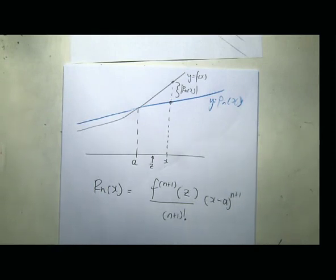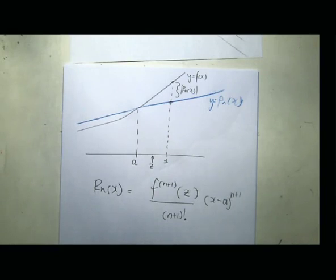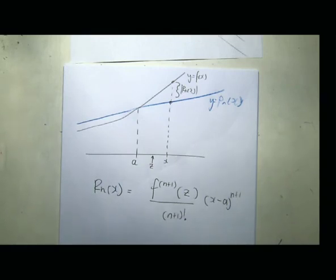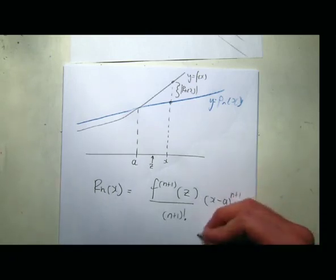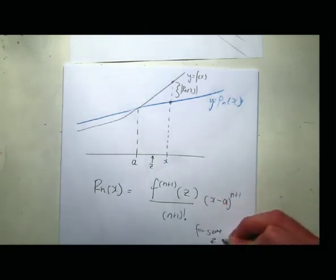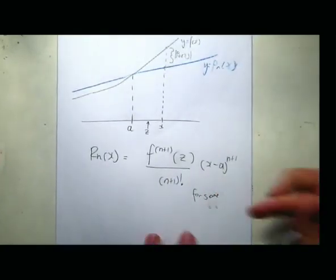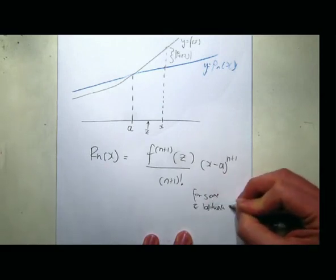The key here: if you've got an X and sub it into this formula, there is a Z somewhere between A and X that is the correct Z that will produce the right answer for the error. The problem with Taylor's theorem is you don't know which Z it is. If you knew which Z it was, you wouldn't need to calculate the error because you'd be able to calculate the function exactly. But you do know that Z is somewhere between A and X.